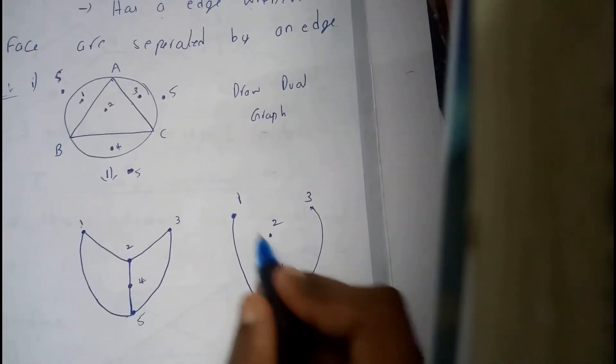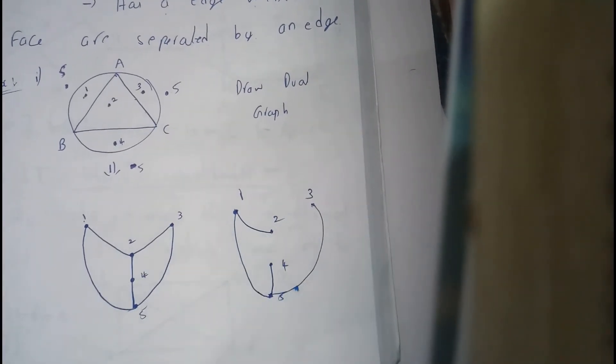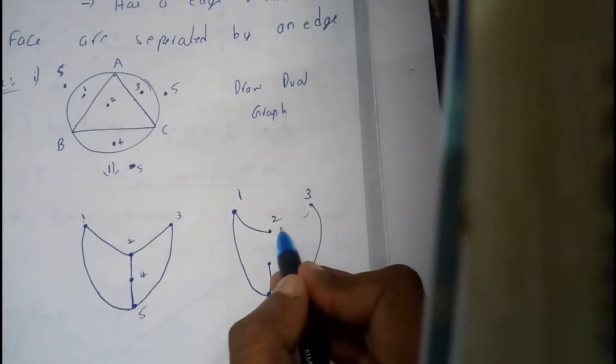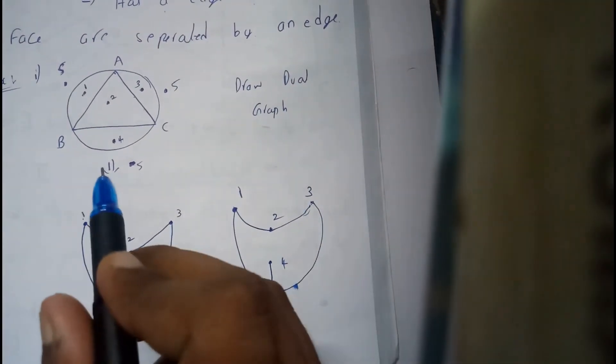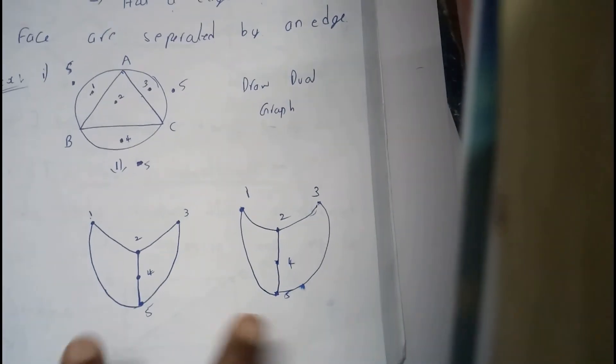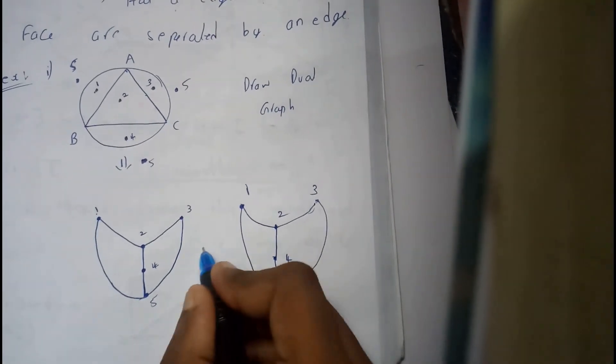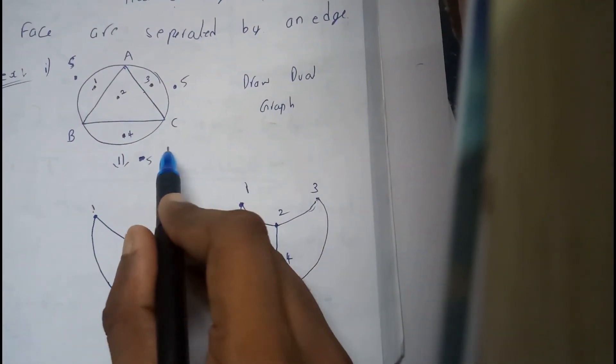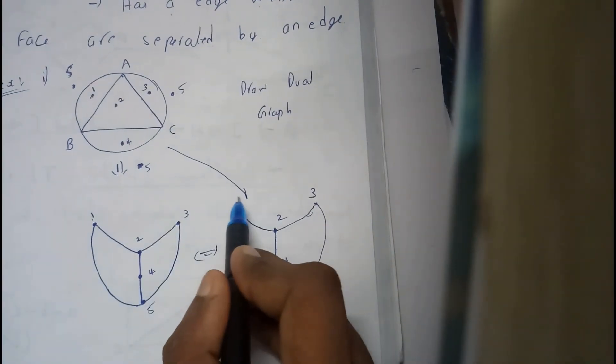Next one and two you are having one, so one and two you are drawing one. Two and three one, two and three one. Two and four one, two and four one. This is what the diagram, they match up. Hence the dual graph for this is this.